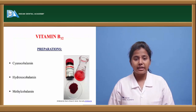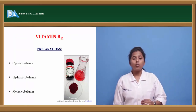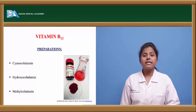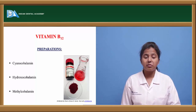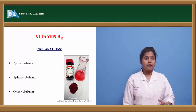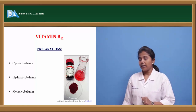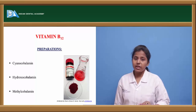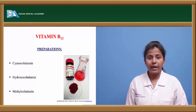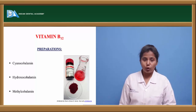Let's see the other kind of hematinics, that is vitamin B12. Vitamin B12 is a very important, essential vitamin for the body. If there is any deficiency of vitamin B12 as well as folic acid, it causes blood disorders or anemia. There are three kinds of vitamin B12 preparations: cyanocobalamin, hydroxocobalamin, and methylcobalamin.